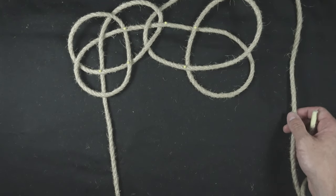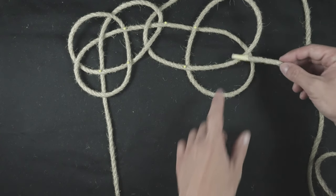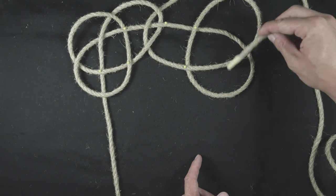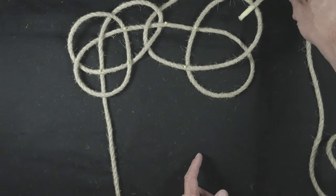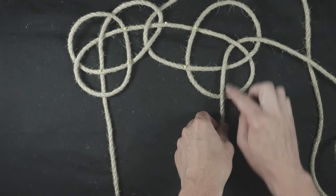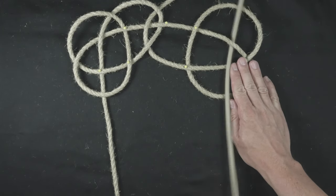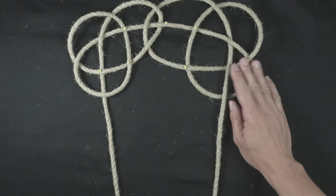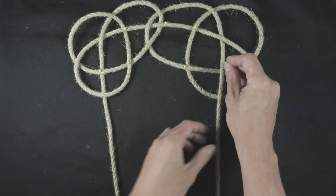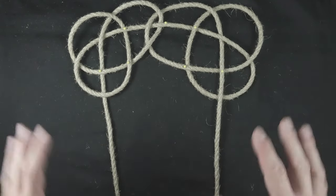Like this, continue by weaving through these four strands: over, under, over. So over, under, over, and under. This completes the top part of the mat.